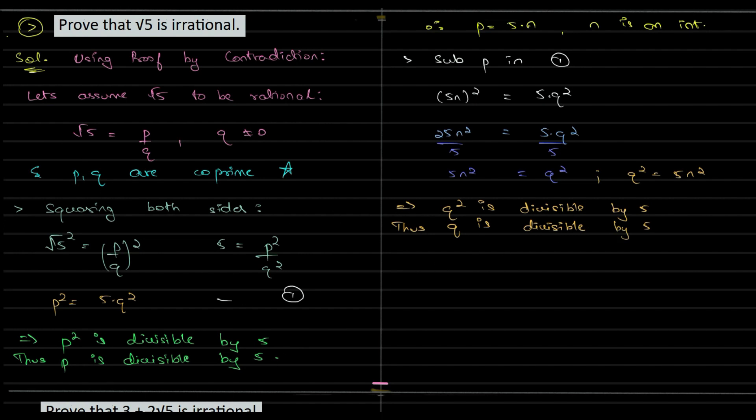So now, we will take equation 2 and equation 3. From 2 and 3, we can conclude p comma q have a factor of 5. Both are divisible by 5. But this contradicts p comma q being co-prime. This is contradictory. This implies our assumption was wrong. Thus root 5 is irrational.